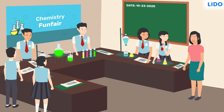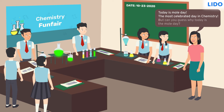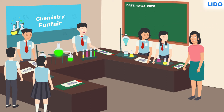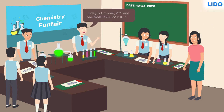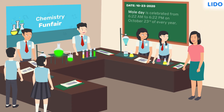Finally, Rina ma'am gives away the answer: today is Mole Day, the most celebrated day in chemistry. Suraj gets the hint and says, 'Today is October 23rd and 1 mole is 6.022 × 10²³.' Ma'am replies, 'Correct! Mole Day is celebrated from 6:22 am to 6:22 pm on October 23rd of every year.'